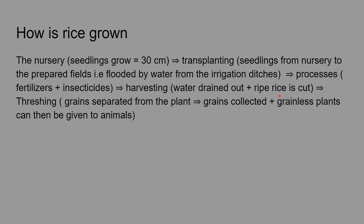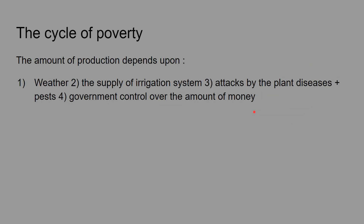Now let's talk about the cycle of poverty. Farmers are working very hard, but they remain stuck in this cycle of poverty because the amount of production basically depends on several factors.